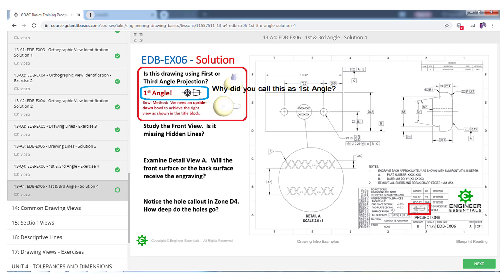So he has also circled question number one up here. You'll see that on this question it says is this drawing using first or third angle projection? And what he put on here was why did you call this first angle?